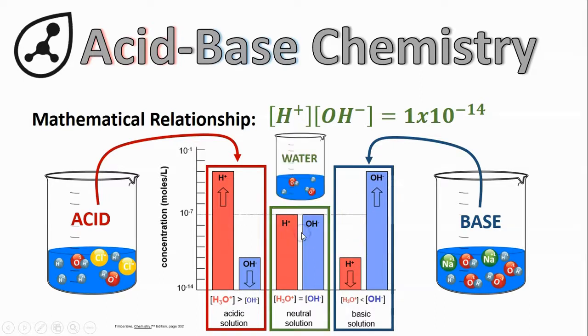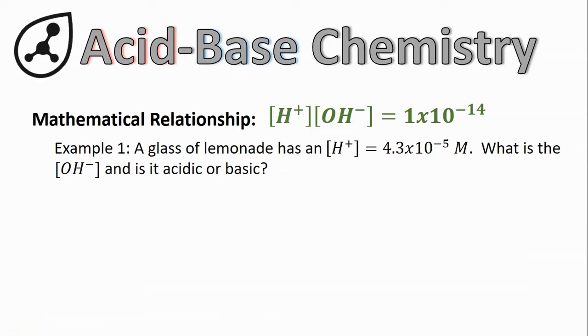In the middle, of course, is a neutral solution like water where the two quantities remain equal. We can also use this equation to do some math ourselves, like this example that says a glass of lemonade has an [H+] = 4.3×10^-5 M. What is the [OH-] and is it acidic or basic?